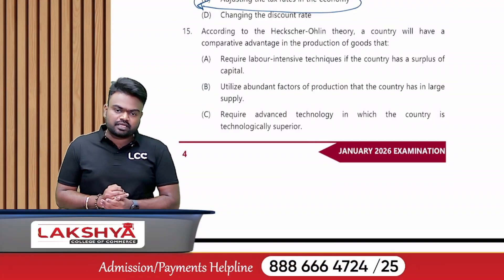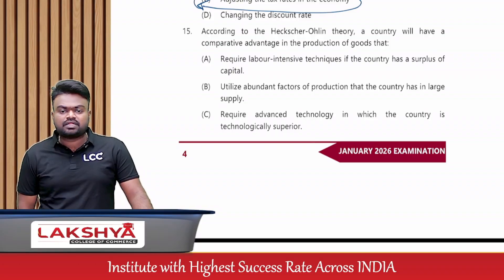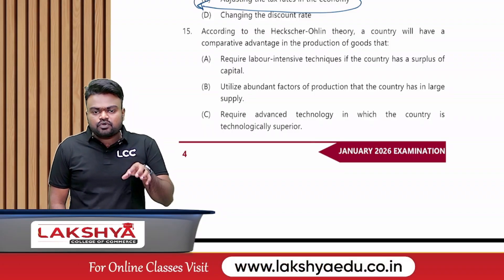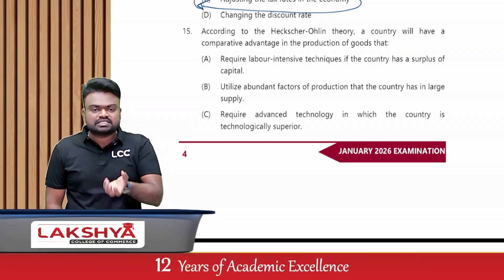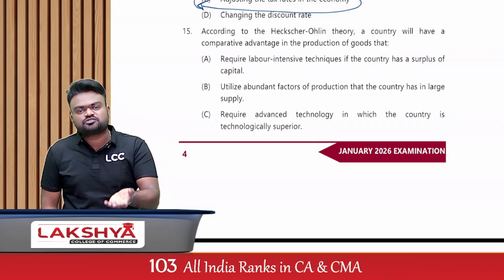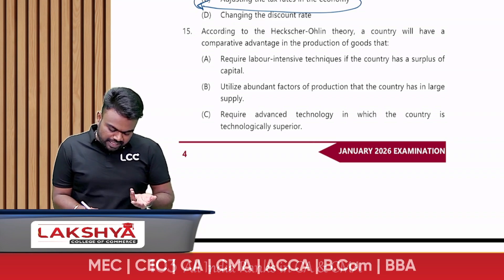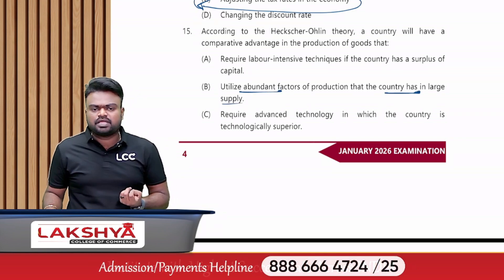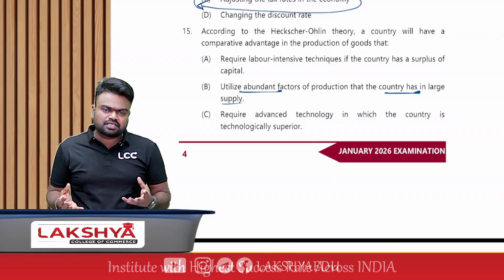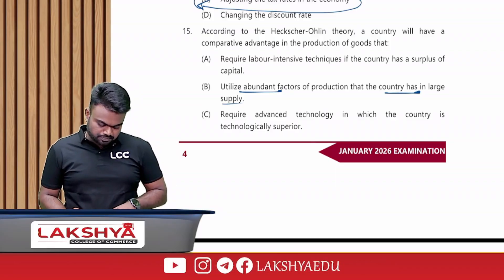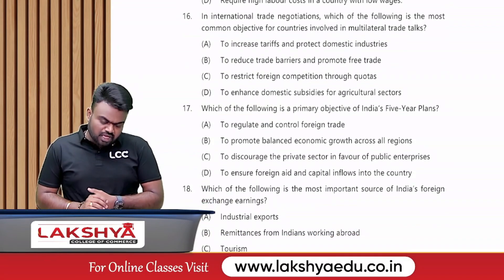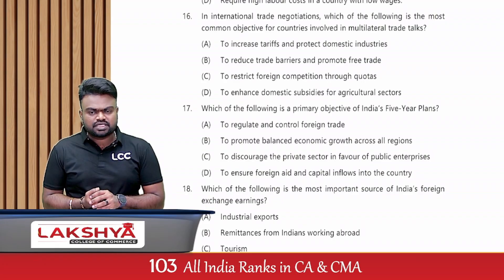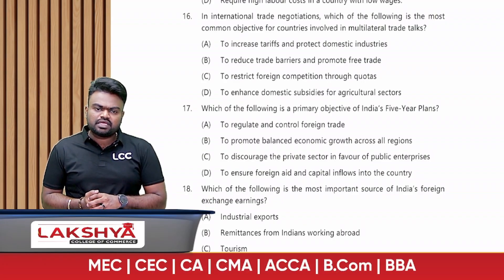According to the Heckscher-Ohlin theory, a country will have a comparative advantage in the production of goods that use its abundant factors of production. If you have factors in surplus, utilize those factors. Produce goods using whatever factors you have in large supply.